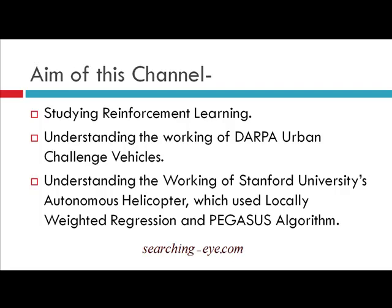Some of the vehicles are listed in the next slide. The third objective is to understand the working of Stanford University's autonomous helicopter, which uses locally weighted regression and the Pegasus Reinforcement Learning algorithm. This algorithm was already mentioned in the locally weighted regression channel of machine learning, and we will learn this algorithm in this channel.